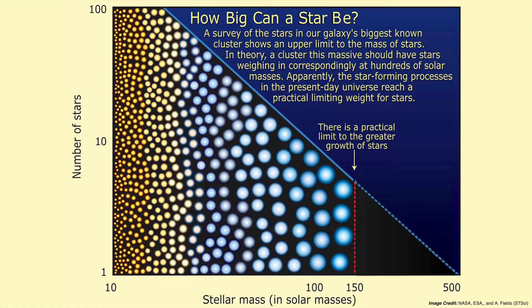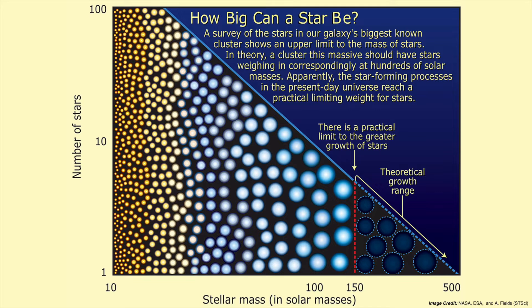Anything above 150 solar masses falls within the theoretical growth range, meaning it's not likely for stars that massive to exist, though we have actually detected some stars that are currently, and most likely temporarily, greater than 150 solar masses.